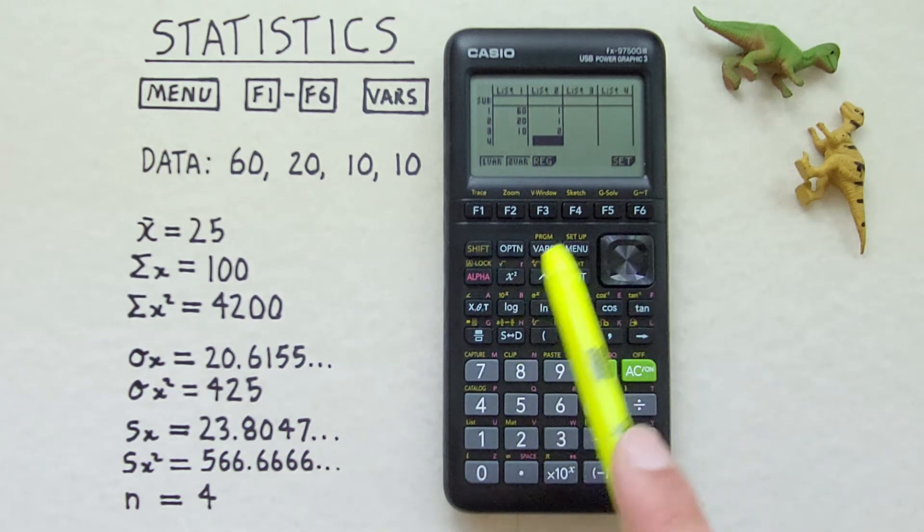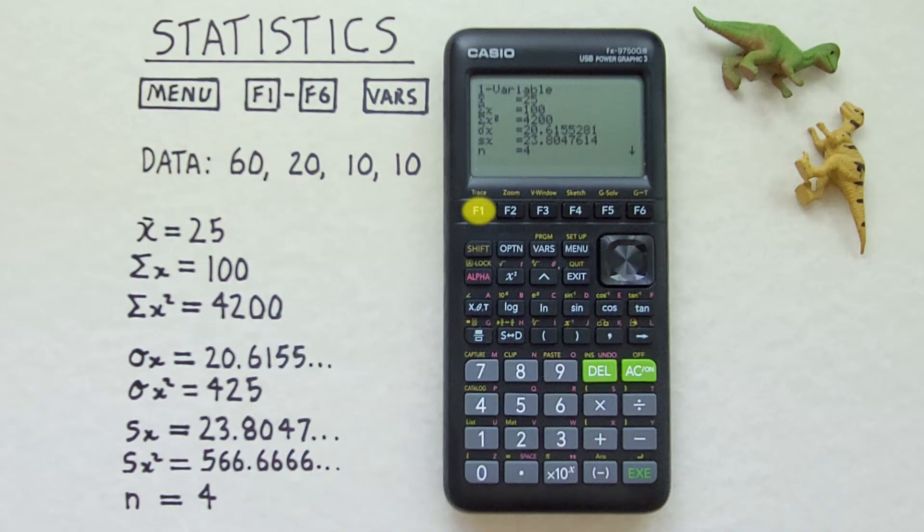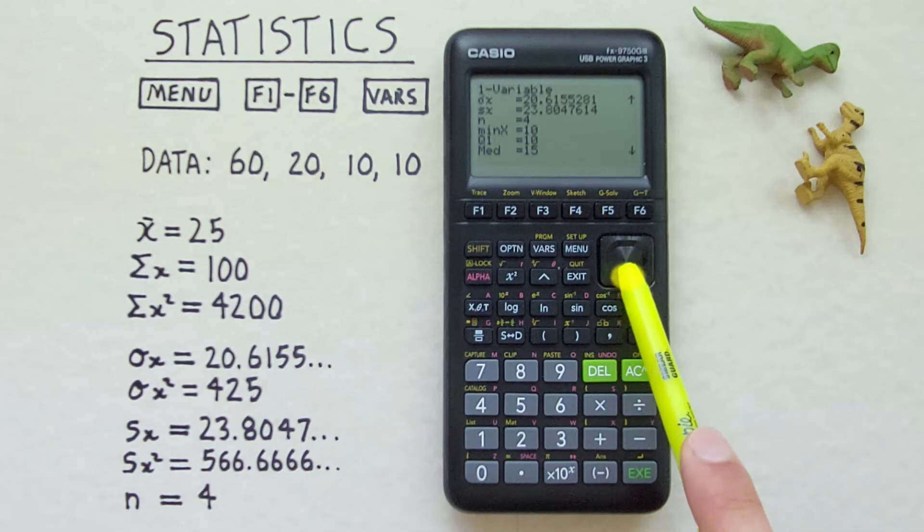And now that we've got our frequency set we can hit the one var key and it calculates our data for us again. And you'll see we get the same result. But we only had to enter that 10 in once. Saving us some time if we have a lot of repeating variables.